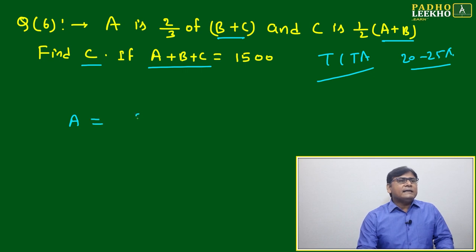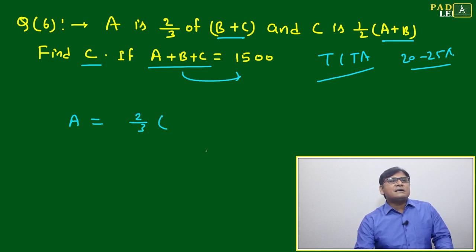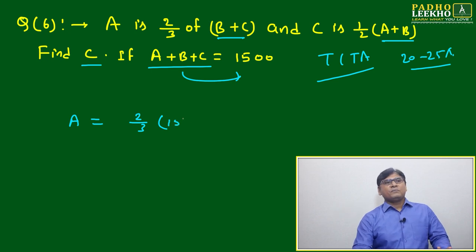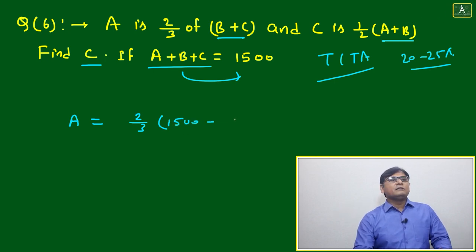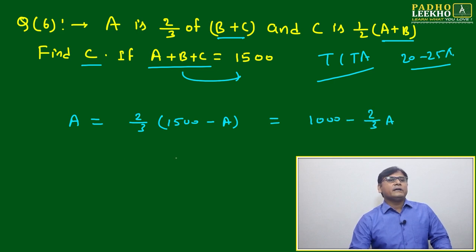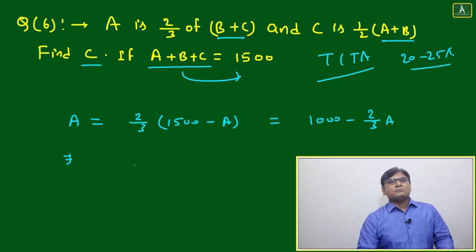The only thing we have to do is apply A equals 2/3 of B plus C. Just write based on this equation - it will become 1500 minus A. Then we can write it will become 1000 minus 2/3 A. Just do some plus minus here and there, it will become 5/3 A equals 1000.